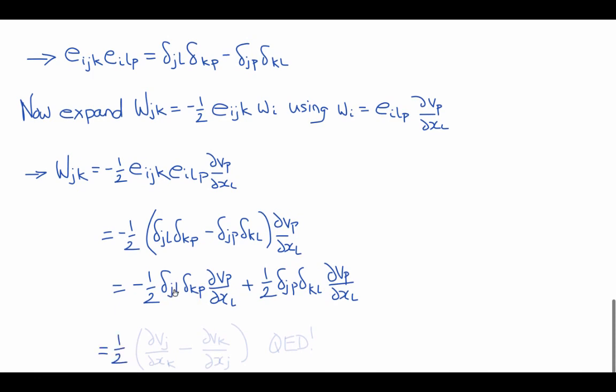This turns l to a j, p to a k, jp to a j and l to a k to give us minus one-half del vj del xk minus del vk del xj, which is our original definition of the components of the spin tensor.